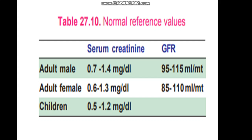that substance — for example, creatinine — in the urine, V is the volume of urine passed per minute, divided by P, where P means the level of that substance — for example, creatinine or urea — in the plasma.